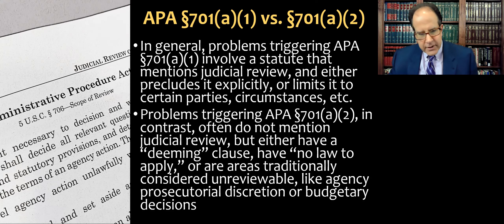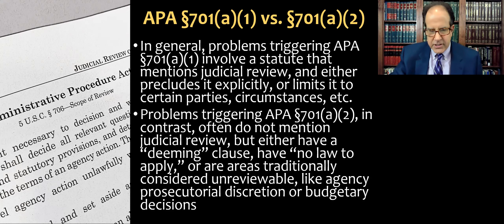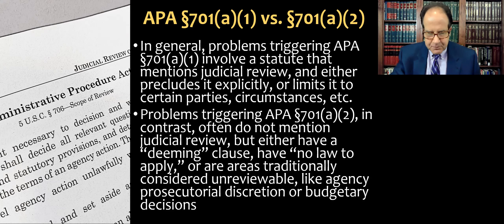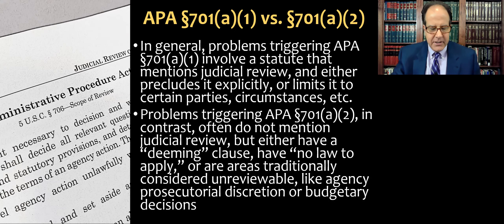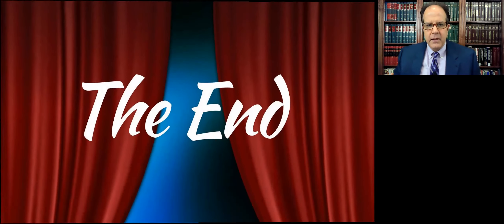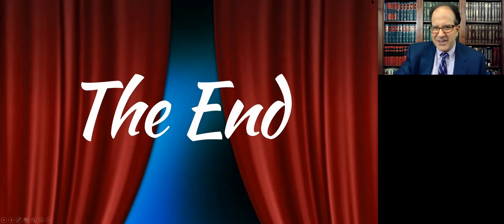There are also a few areas traditionally considered unreviewable, like agency decisions about whether to bring enforcement actions and agency budget decisions — you're not going to be able to sue an agency because of how it's spending its money internally. That concludes our brief lecture, a quick explainer of this idea of preclusion of judicial review.